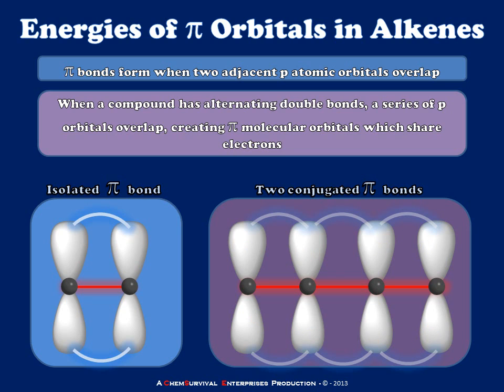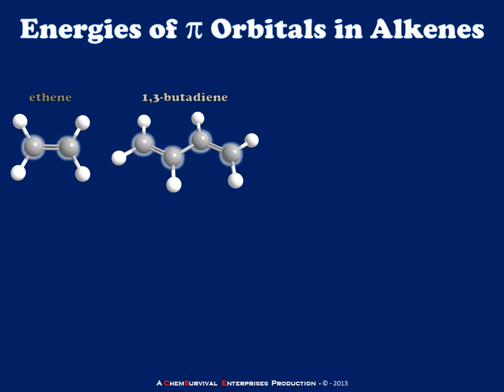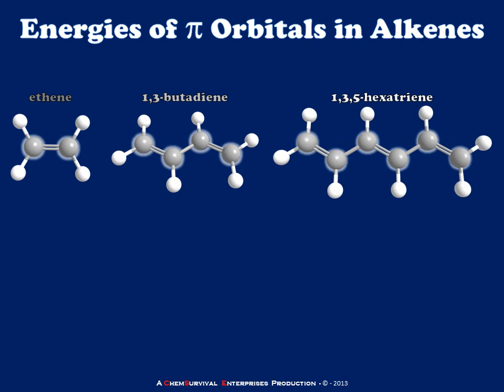Now let's take a look at how we can quantitatively determine the energies of these different molecular orbitals and how that applies to spectroscopy. Shown here is ethene with a single pi bond, then 1,3-butadiene with two conjugated pi bonds, and 1,3,5-hexatriene with three double bonds. If we look at the maximum UV absorption for these compounds, we notice a trend: as the molecules grow larger, their lambda max becomes longer in wavelength, meaning they're absorbing photons of lower energy. This indicates that more conjugated pi systems have a lower HOMO-LUMO energy gap, and this is in fact the case.